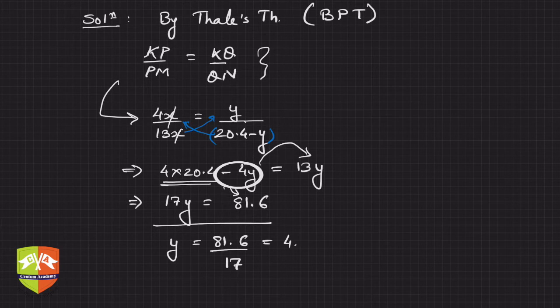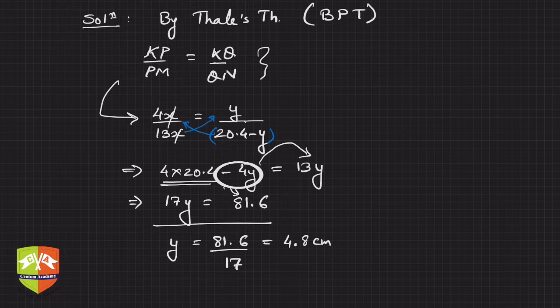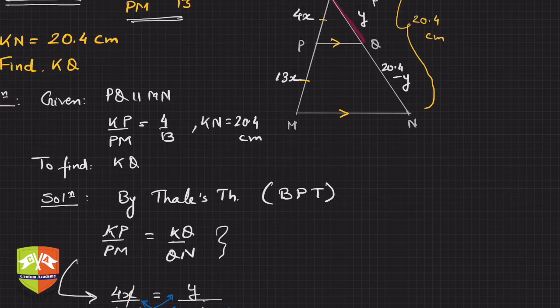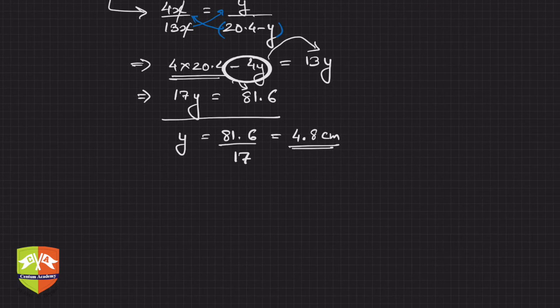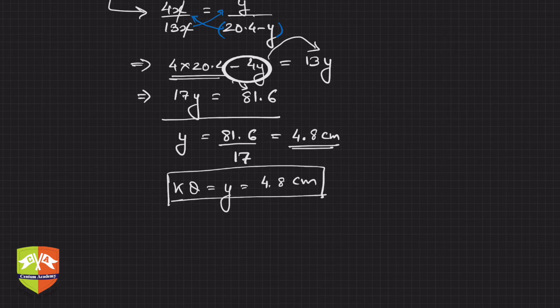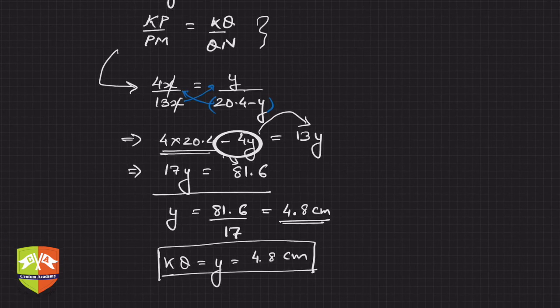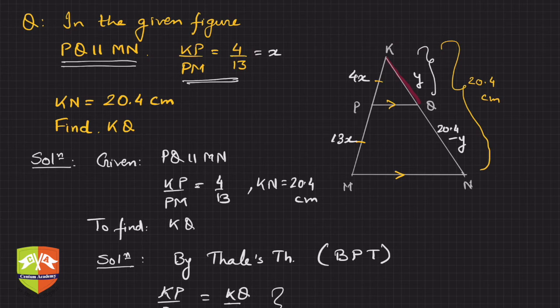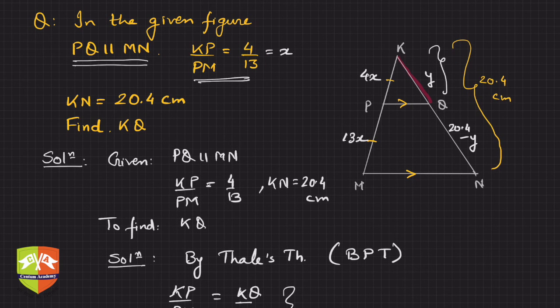So we found out y, and that's what we have to find out. We had to find out the length of KQ. Hence, KQ is nothing but y, which equals 4.8 centimeters, and this is the result. So what did we learn in this problem? We learned the application of Basic Proportionality Theorem, and the rest was the game of finding one value after another when two proportions are given.